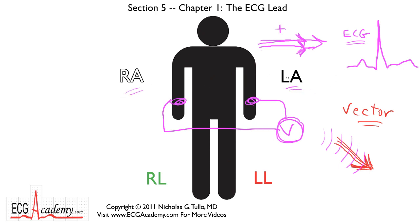By convention, right arm to left arm is known as Lead 1. In a normal person, it will look like this — with a P wave and a QRS complex that are both upright, because the P wave is traveling right to left and the QRS complex is also traveling right to left. So that's Lead 1.